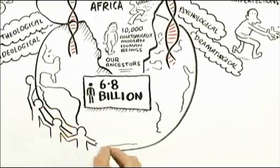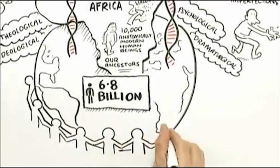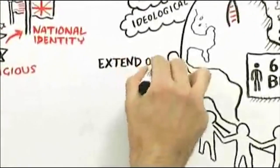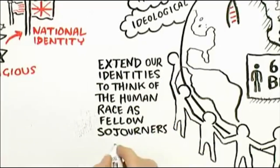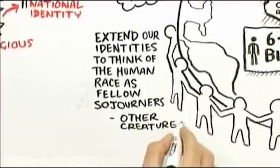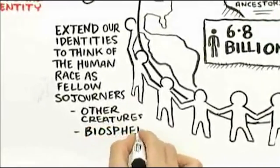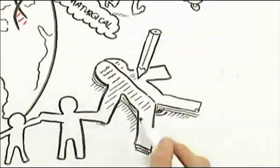We don't lose the old identities of nationhood and our religious identities and even our blood ties. But we extend our identity so we can think of the human race as our fellow sojourners and our other creatures here as part of our evolutionary family and the biosphere as our community. We have to rethink the human narrative.